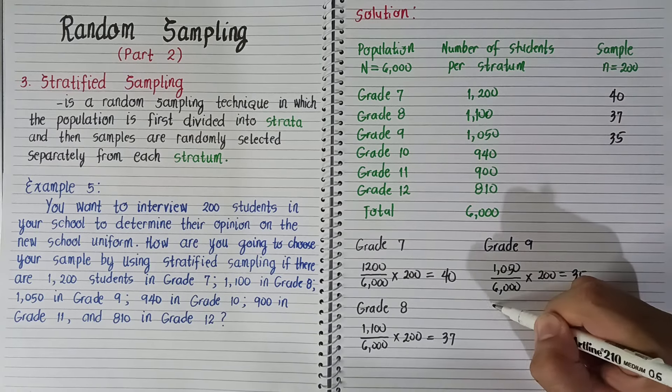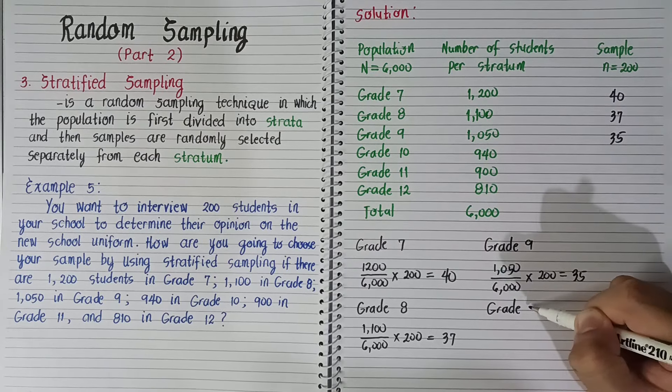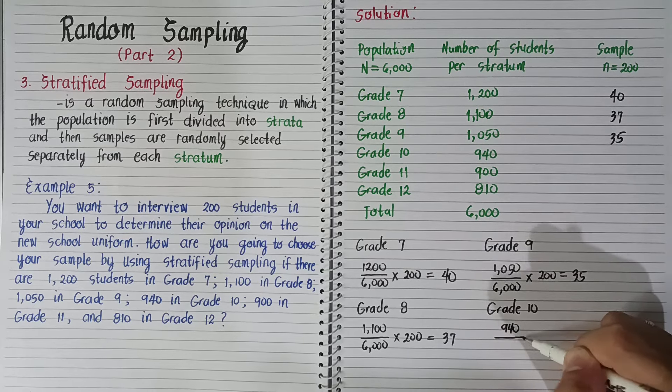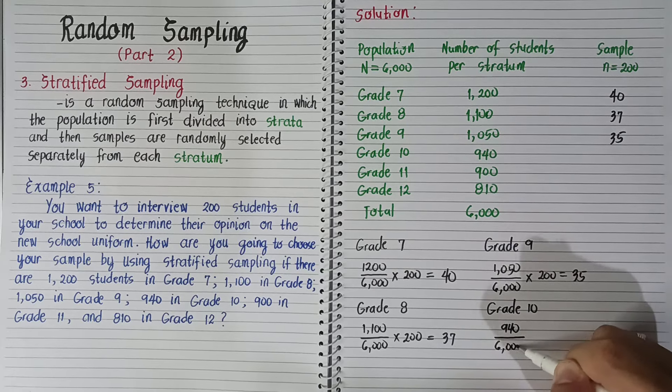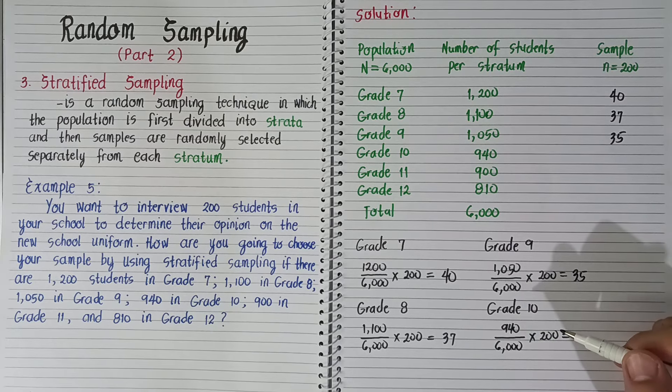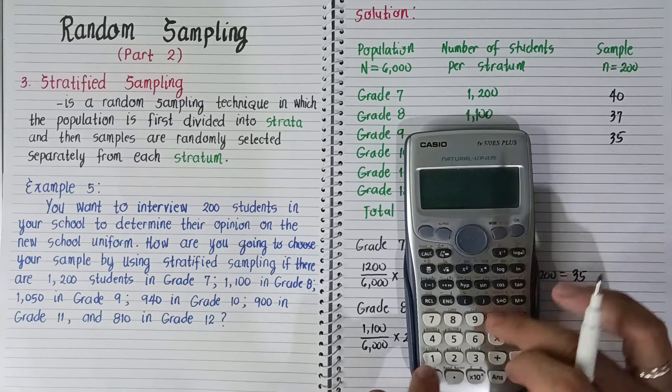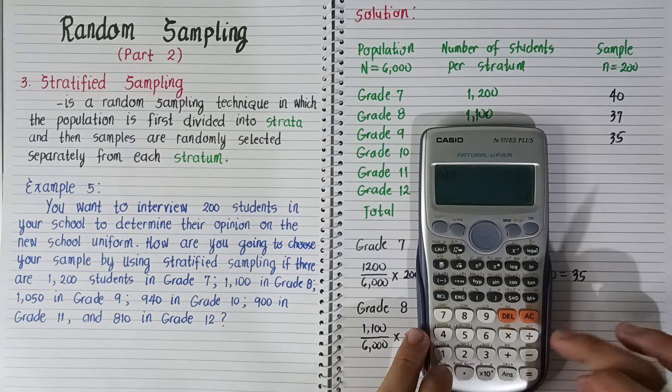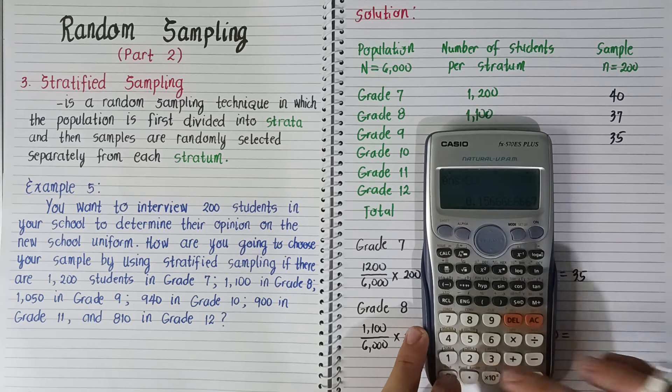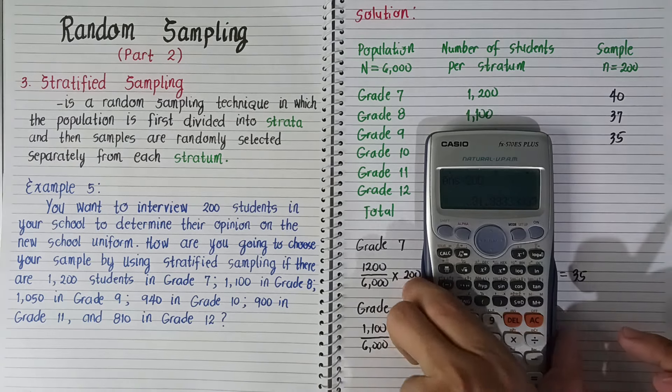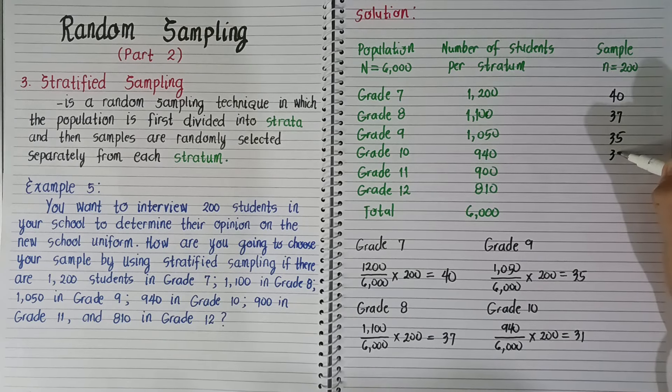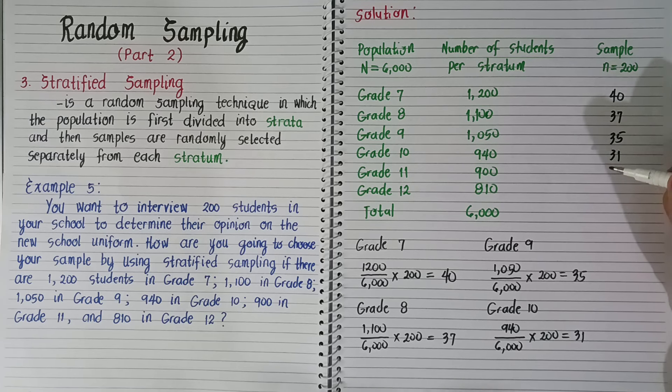For grade 10, 940 divided by 6,000 times 200 equals 31.33, or 31 when rounded off. So we have 31.